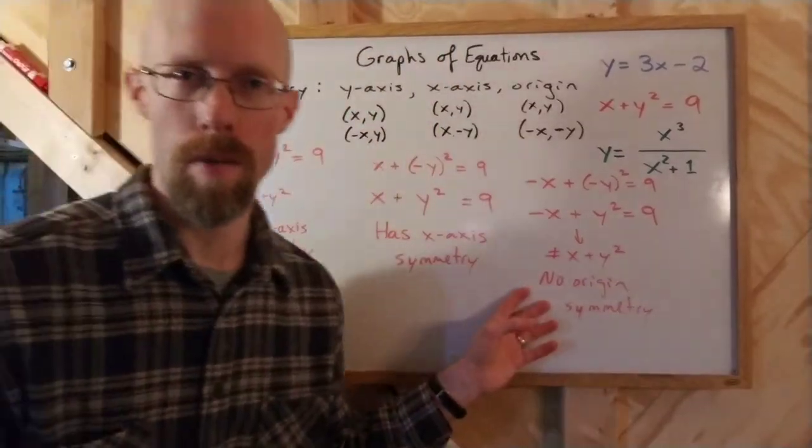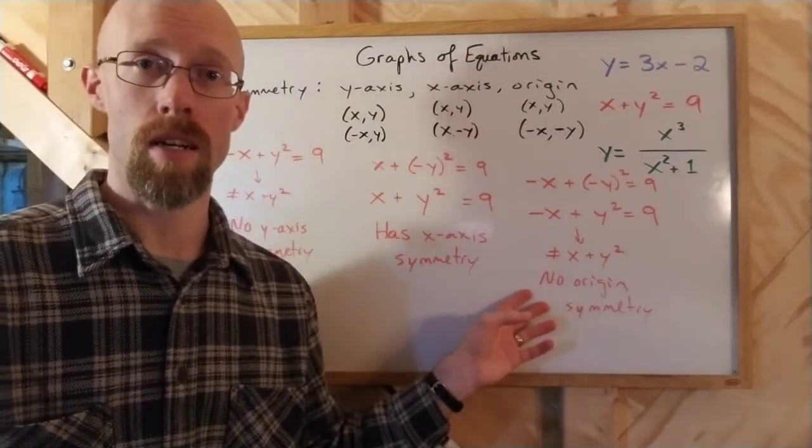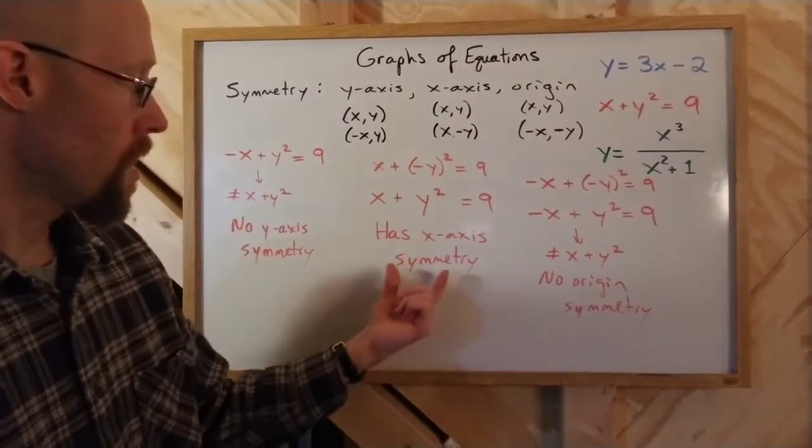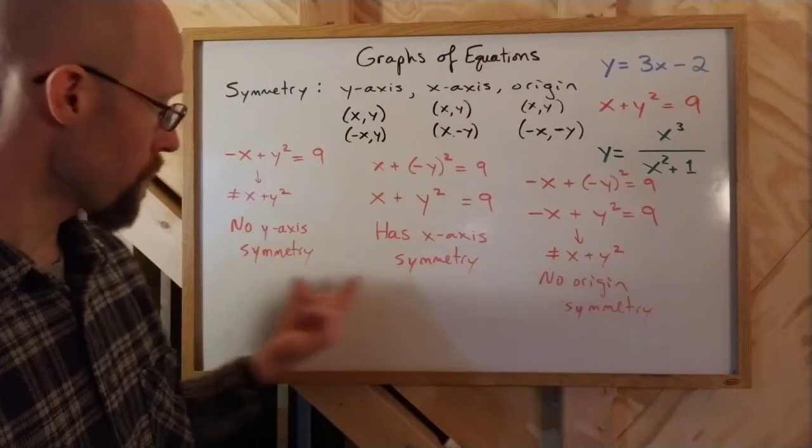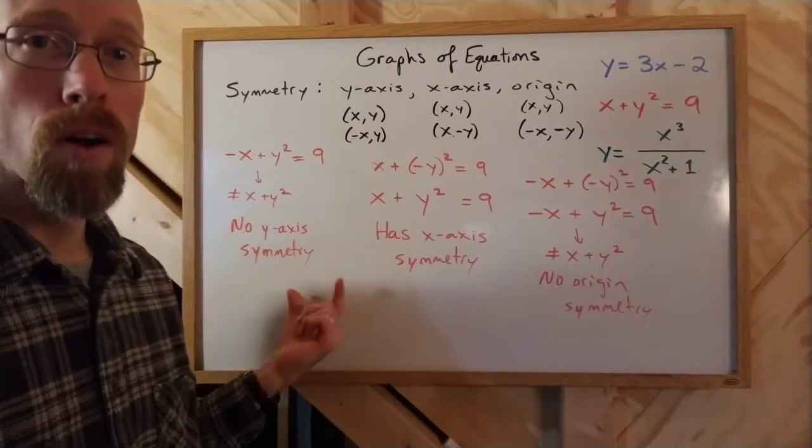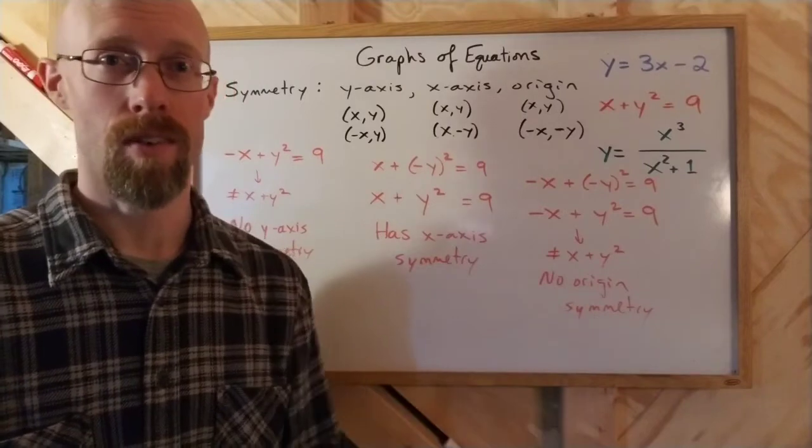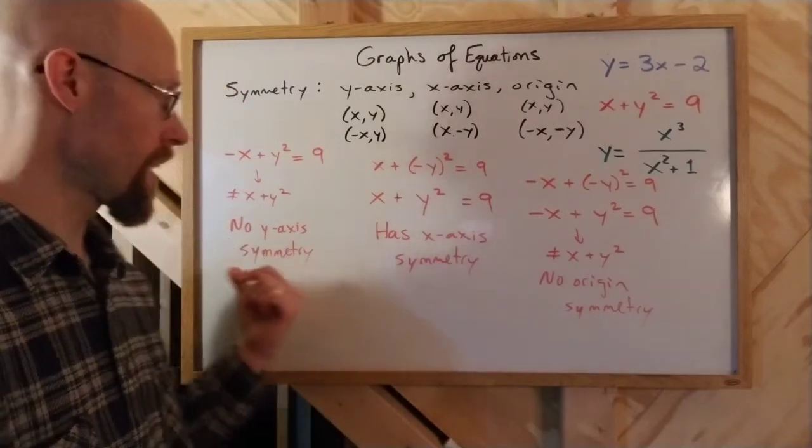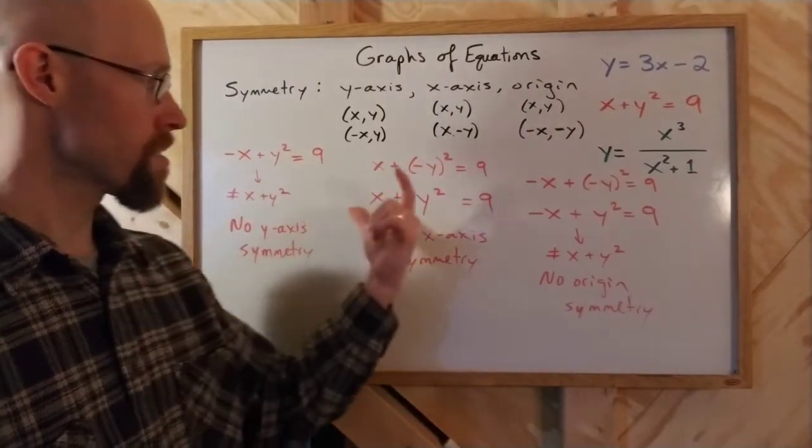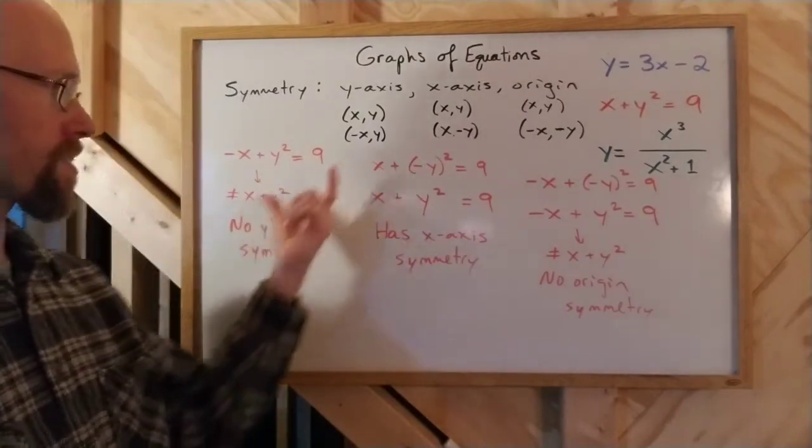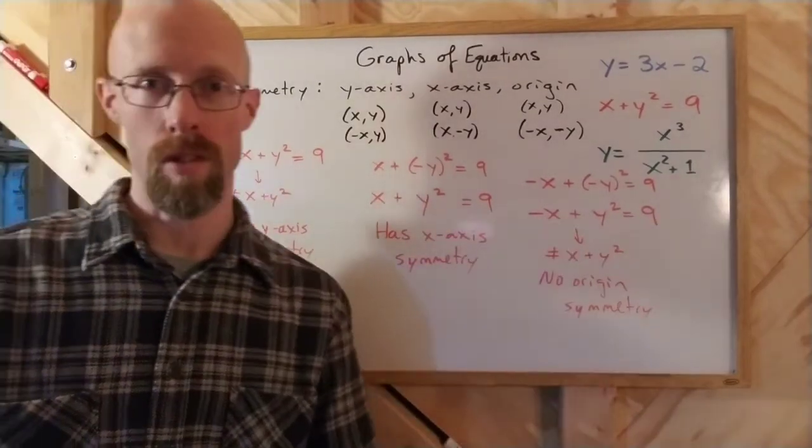Origin symmetry, I guess what I was trying to say a minute ago, is that origin symmetry only occurs if you either have to have both of these or neither of them, and then this one still happens. Okay, so you can't have no y-axis symmetry, but x-axis and still get origin. That wouldn't work that way.